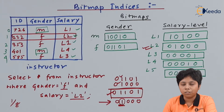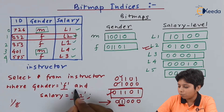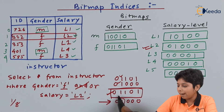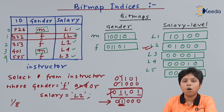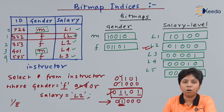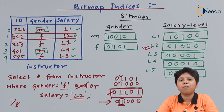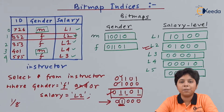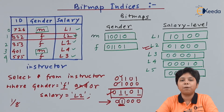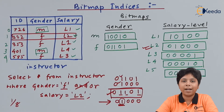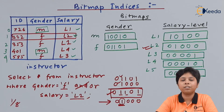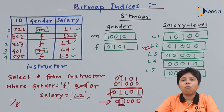For bitwise OR on the same bitmaps, we get 0 1 1 0 1, meaning the second, third, and fifth records have either gender F or salary level L2. In this way we can perform bitwise AND or bitwise OR on bitmaps to query data with extremely fast results compared to ordered or unordered hashing or indexing.